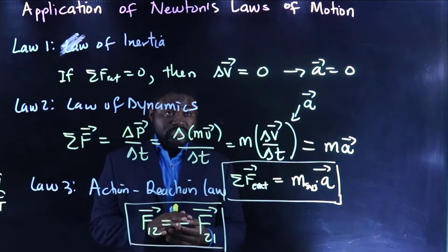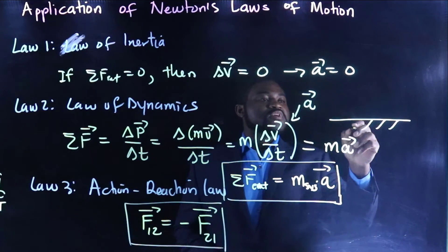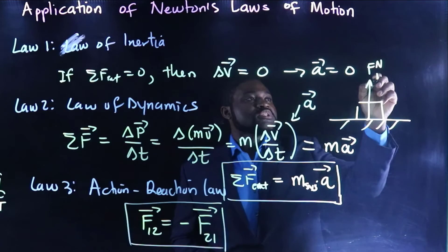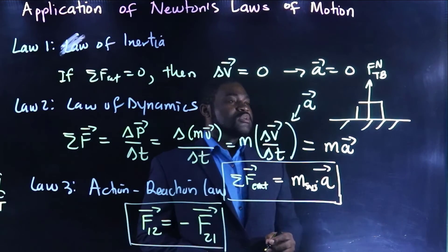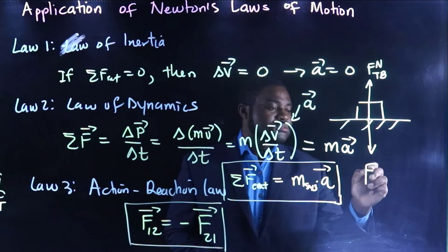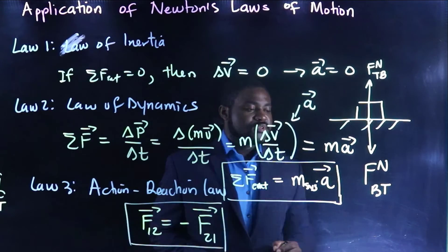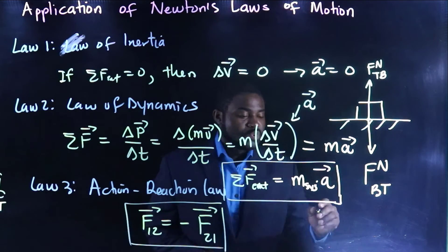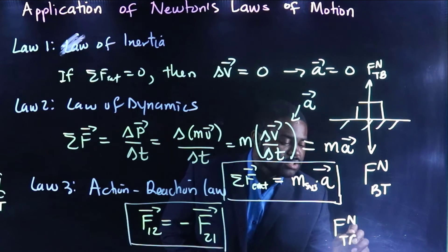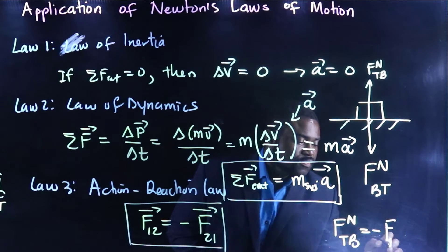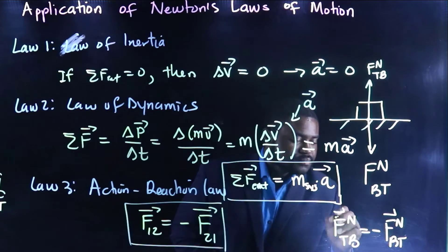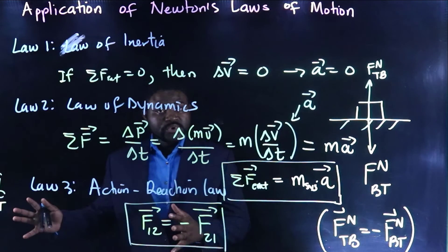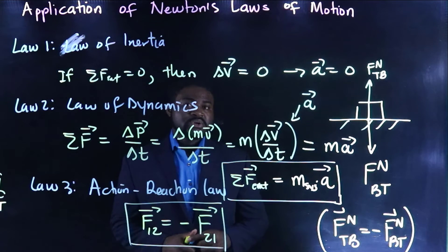For example, if a book is lying on a table, the table asserts a normal force on the book, and the book in turn asserts a normal force on the table. Forces occur in pairs, and by Newton's third law, the normal force that the table asserts on the book is equal but opposite to the normal force that the book asserts on the table. Based on these three laws, we will now analyze a series of motions.